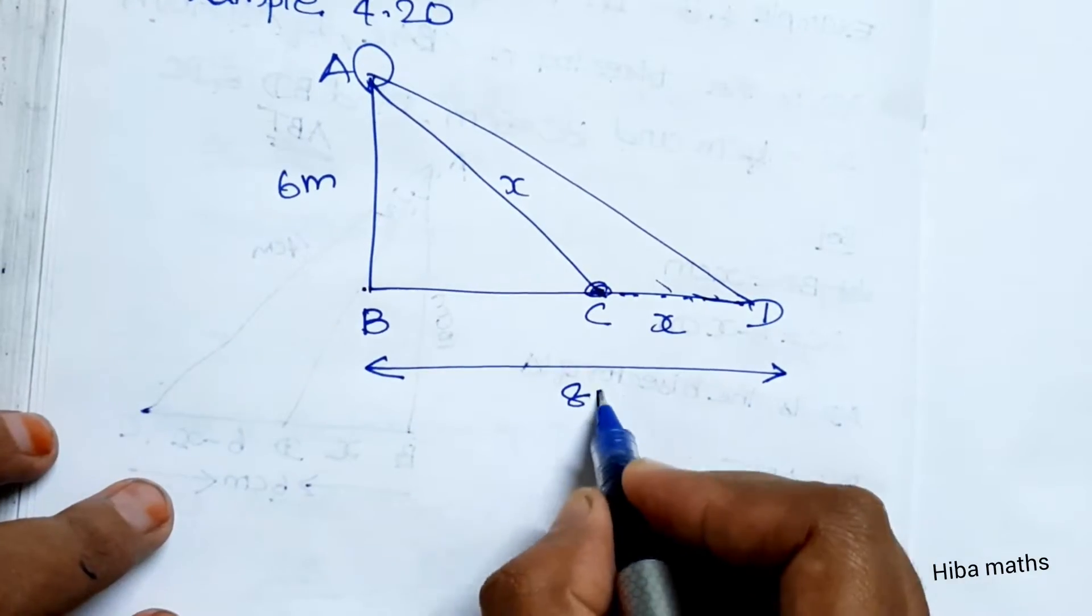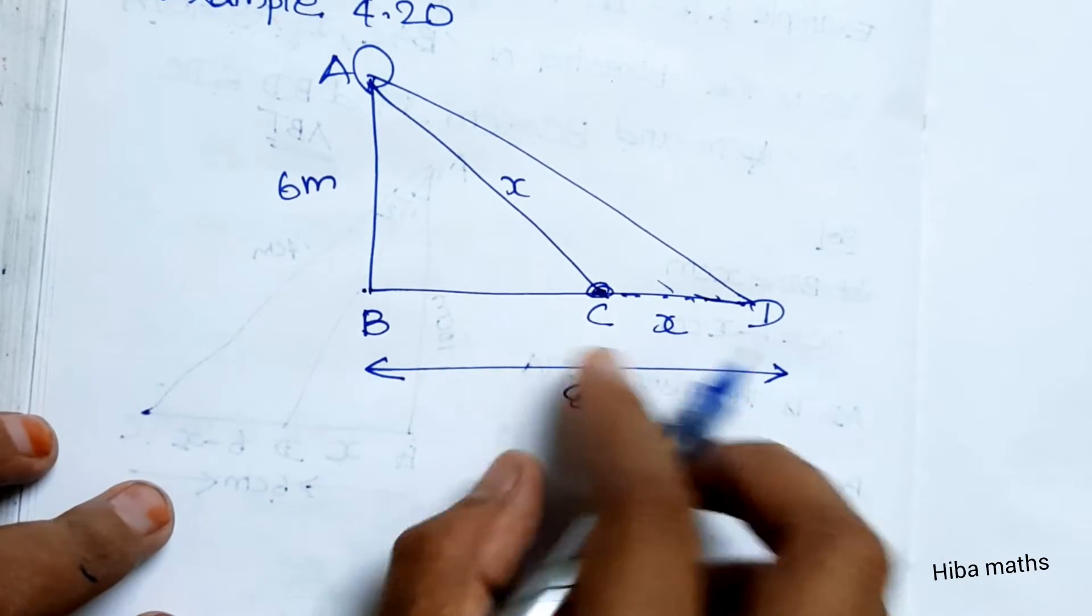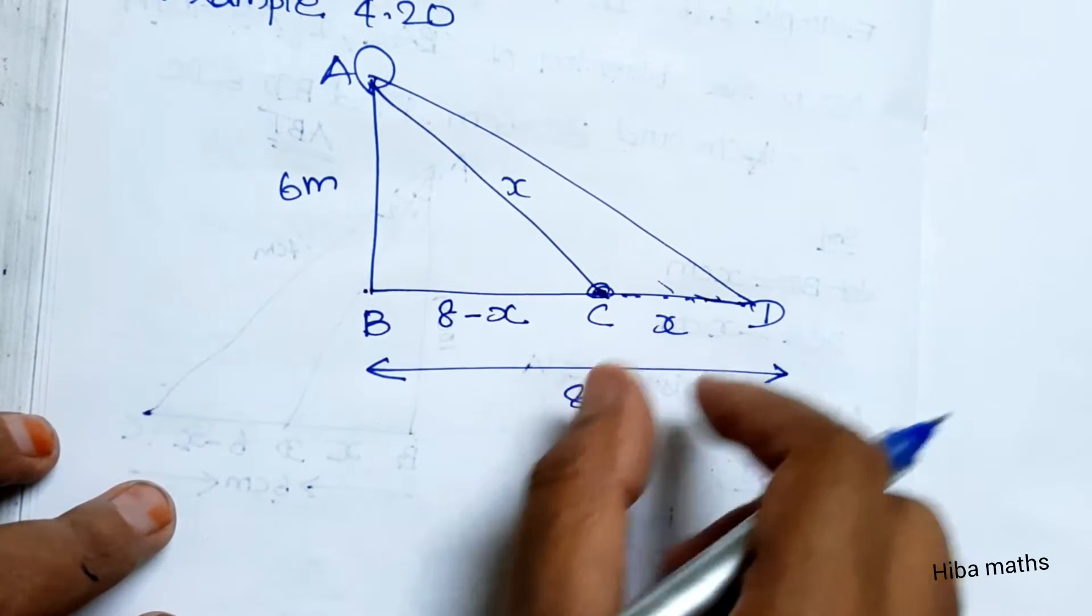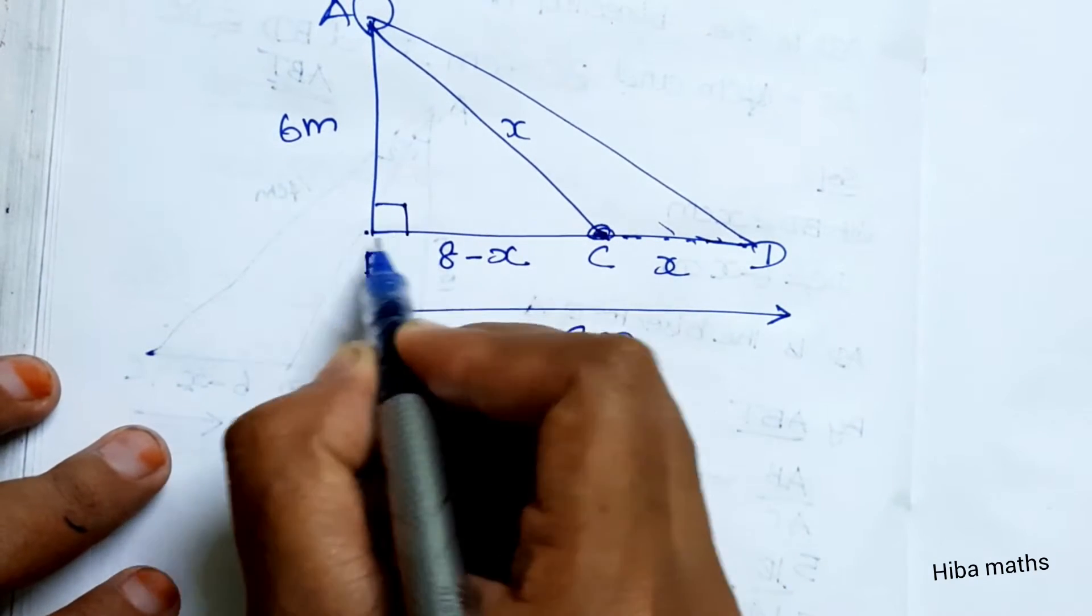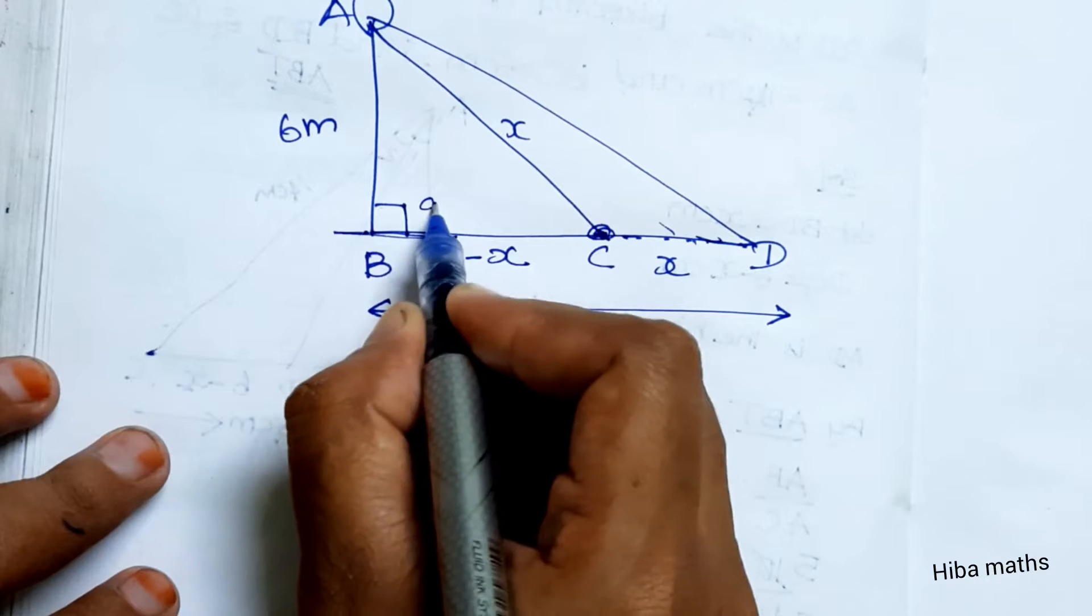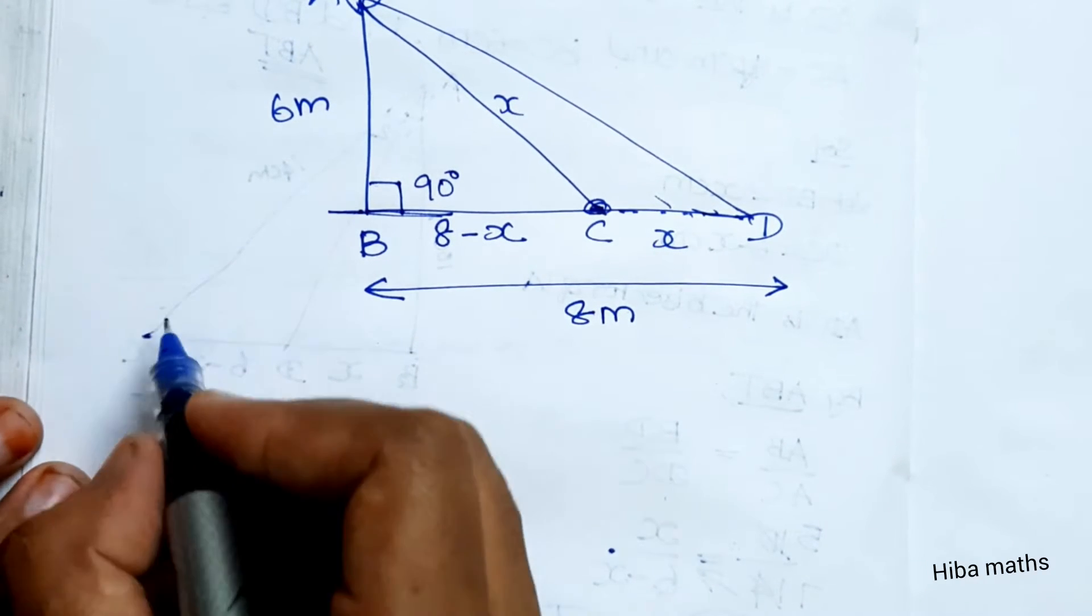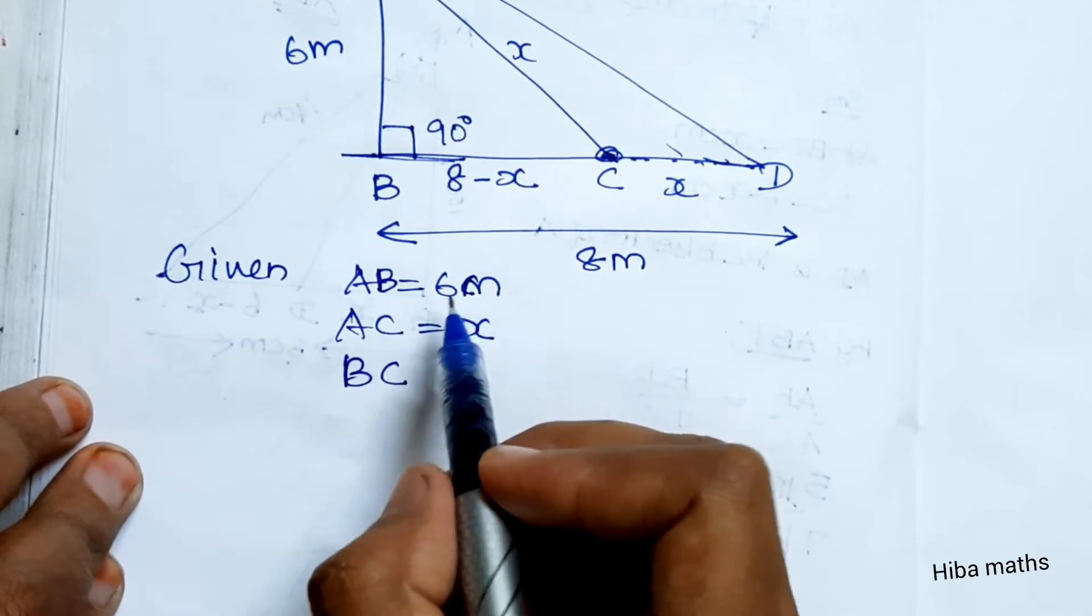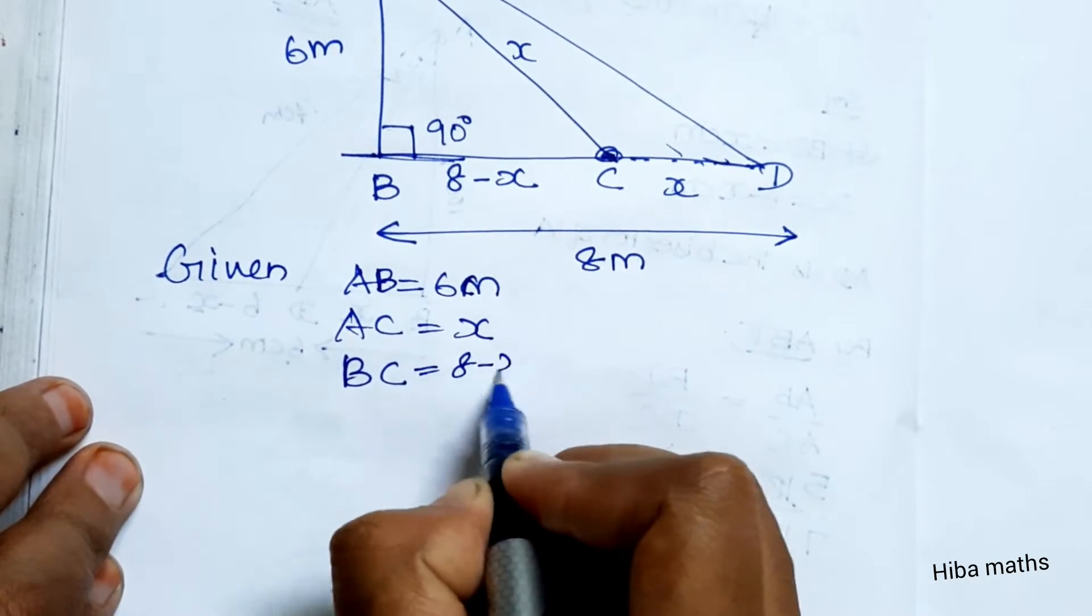Let's look at the diagram. The total distance is 8 meters. CD is x, so BC is 8 minus x. The full distance is 8, and this is x, so 8 minus x is BC. Given: lamppost AB is 6 meters, AC is x, BC is 8 minus x.